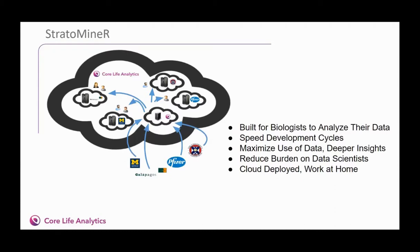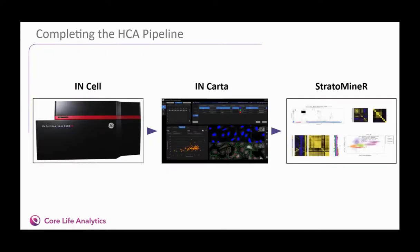Strataminer is a cloud-deployed platform. Each of our customers has their own deployment, accessible through a standard web browser — ideal in these days of de-densification when most scientists are only allowed on premises to carry out bench work. The benefits become very obvious: it accelerates analysis cycles, reduces the burden on data science specialists, and most importantly gives the user far deeper insights into their data. For Incel users, Strataminer completes the high content analysis pipeline, allowing them to rapidly turn images into knowledge.